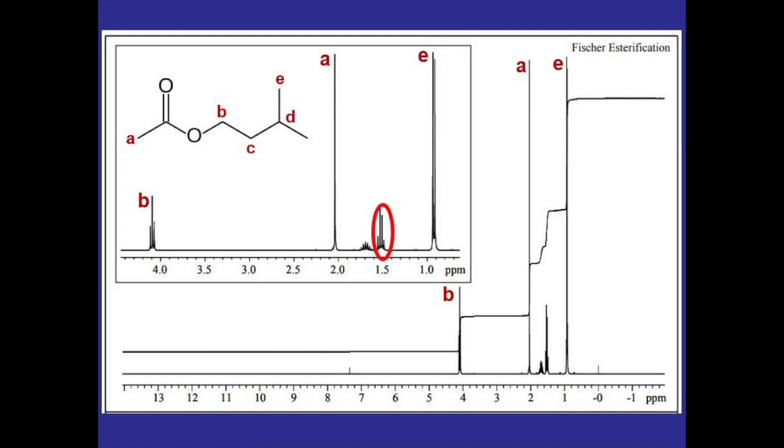This signal around 1.5 ppm's is a quadruplet, which means it's probably for hydrogen C because it has three neighboring protons. Plus its integration looks to be about the same size as that for hydrogen B, which means it would be an integration of two, which helps confirm that this is the signal being produced by hydrogen C.